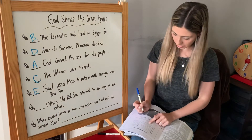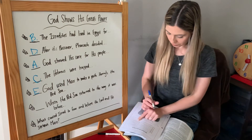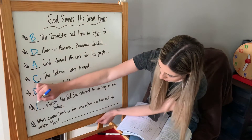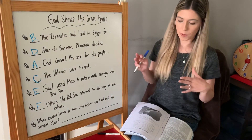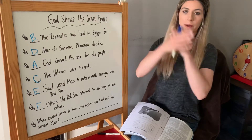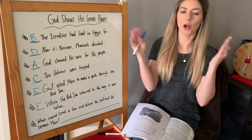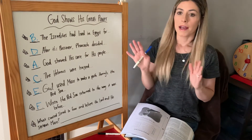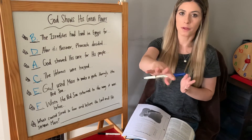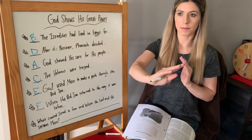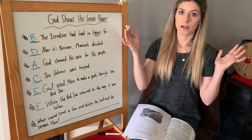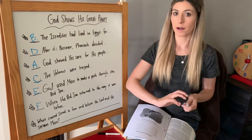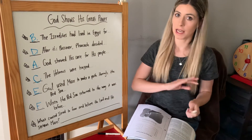Our last one — we only have one answer left. When the Red Sea returned to where it was before, God used it to kill all of Pharaoh's army. The answer is F. What happened was, God's power went through Moses to open up the Red Sea so all of the Israelites could travel through safely on dry land. After the Israelites made it through, in order to stop Pharaoh's army from following them, God had the Red Sea released and it came right back down, landing on top of Pharaoh's army and destroying all of them, so they couldn't chase after the Israelites anymore.